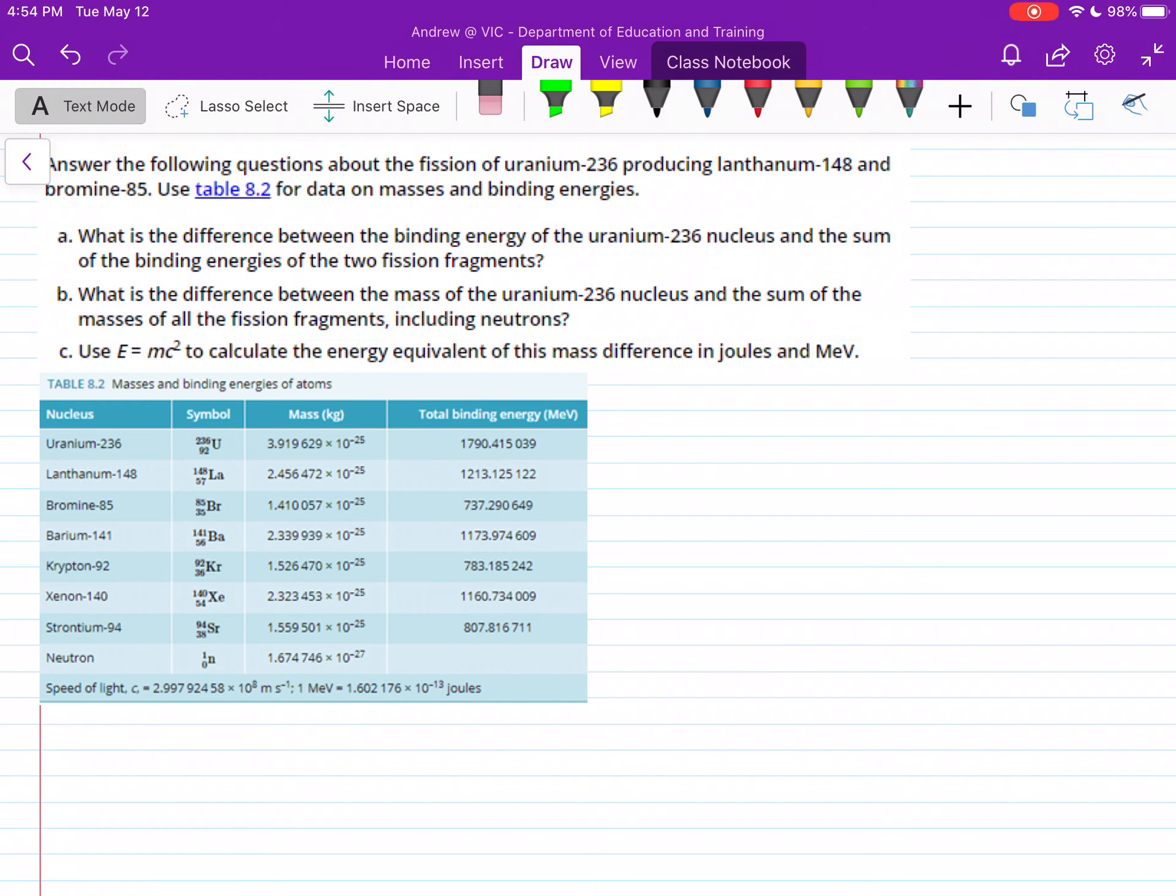G'day all, in this video we're going to be looking at breaking down a fission equation and we're just going to focus on part A for this example. Answer the following questions about the fission of uranium-236 producing lanthanum-148 and bromine-85.